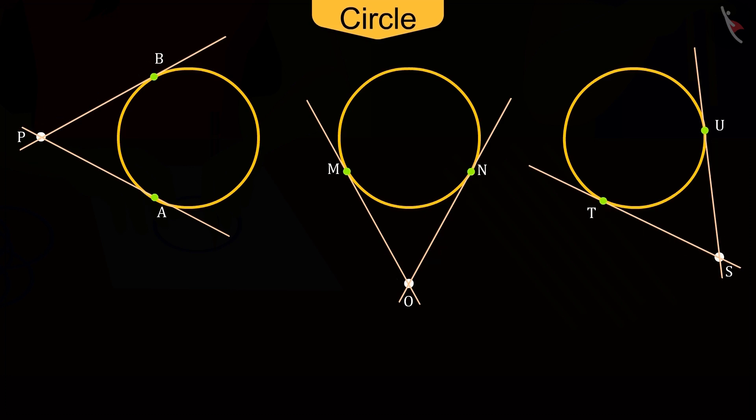If we measure PA, PB, OM, ON, ST and SU, then we find that PA and PB, OM and ON, ST and SU are mutually equal.